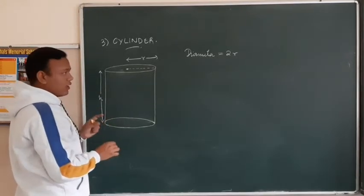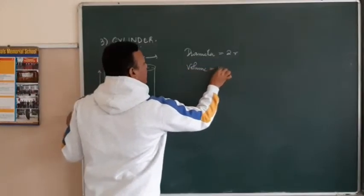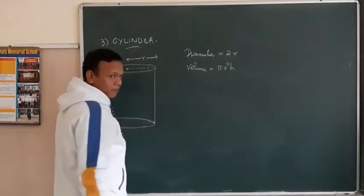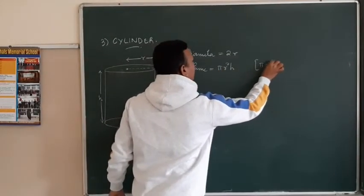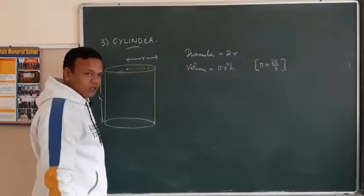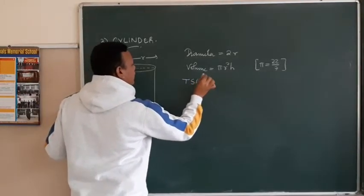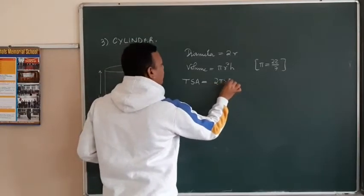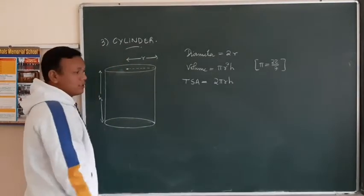For a cylinder, the formula for volume will be πR²H, where the value of π is 22/7. This is the volume formula for a cylinder. The total surface area formula is 2πRH, where R is the radius of the base and H is the height of the cylinder.